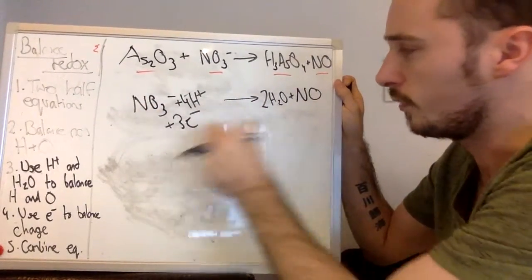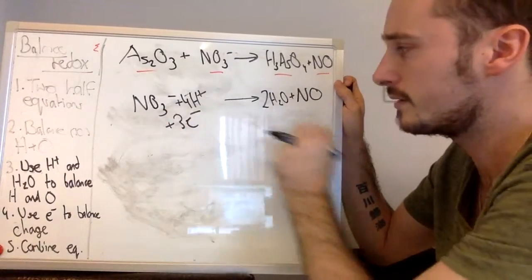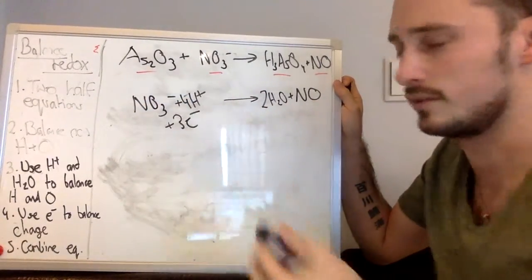Okay, so this half equation is now balanced. The charges are balanced, the amounts of oxygens are balanced, the amounts of hydrogens are balanced.